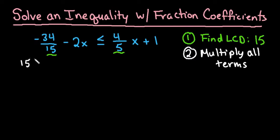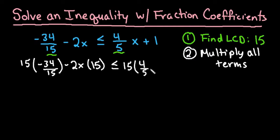So I'm going to do 15 times the fraction negative 34 fifteenths. I'm going to do minus 2x times the 15, and it doesn't matter the order that you write the multiplication in because it's commutative. 15 times 4 divided by 5 and then 15 times 1.